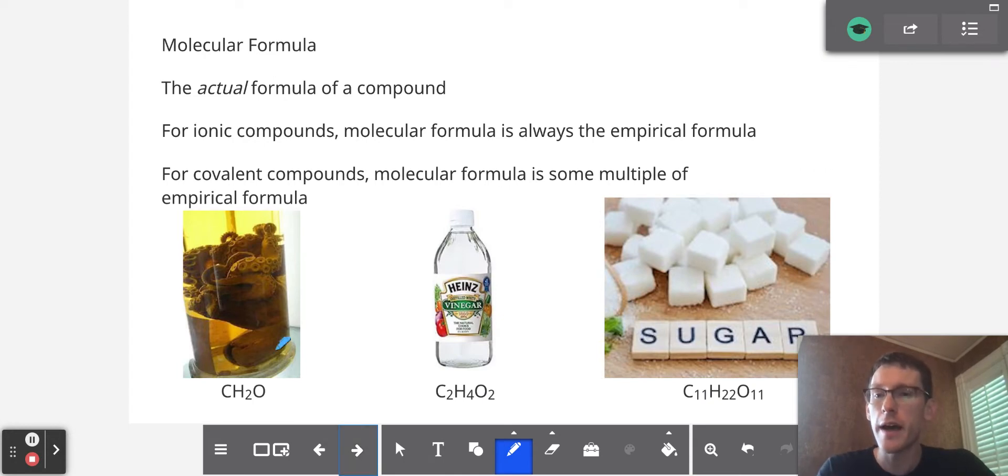For example, we have CH2O, which is formaldehyde. That is the true molecular formula of formaldehyde, and you can't reduce this down anymore. It's also the empirical formula.